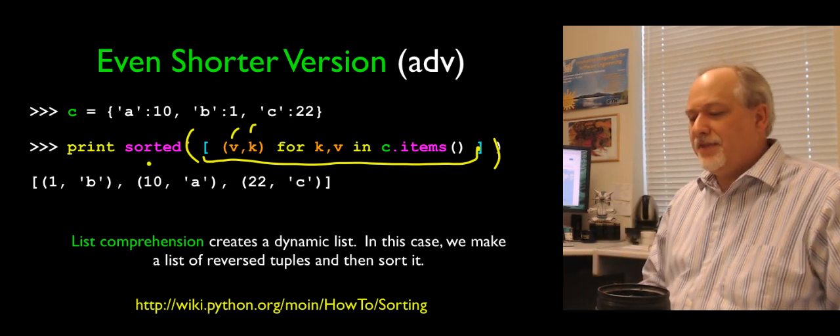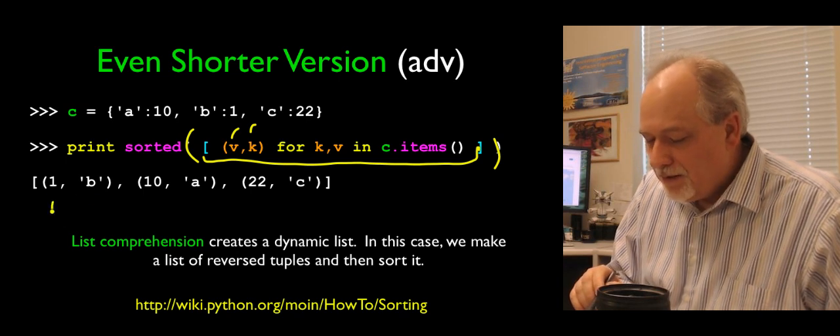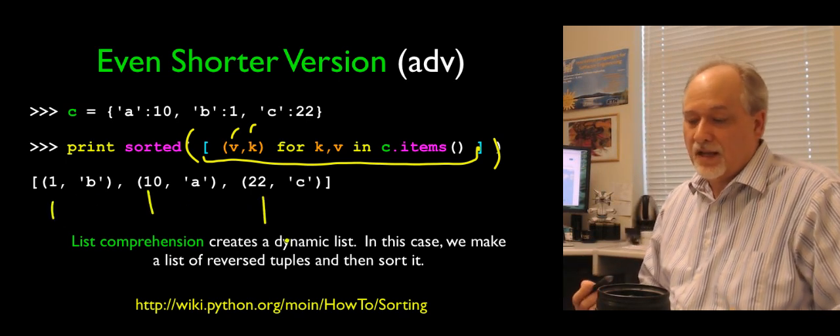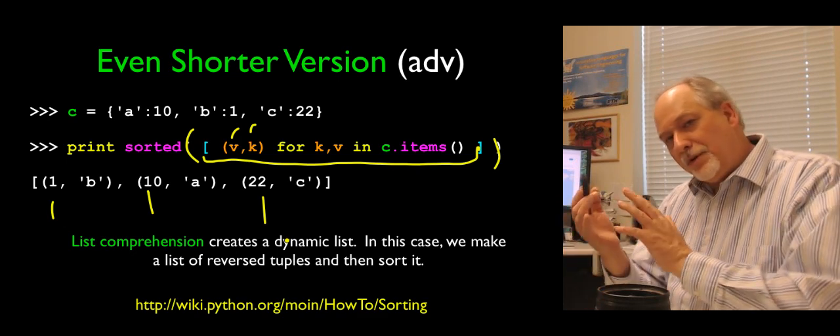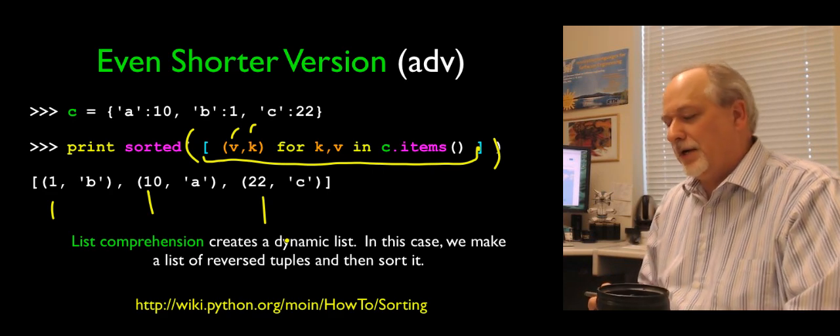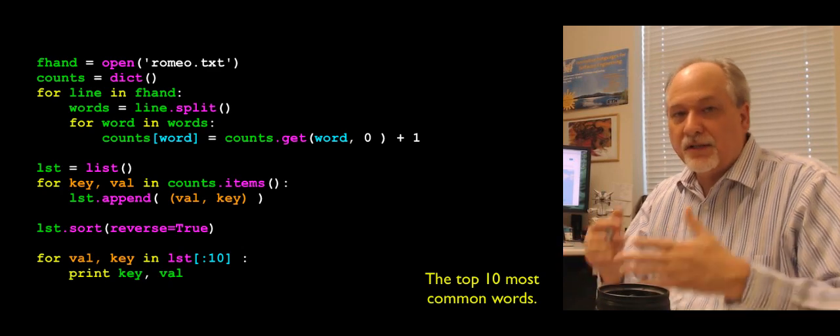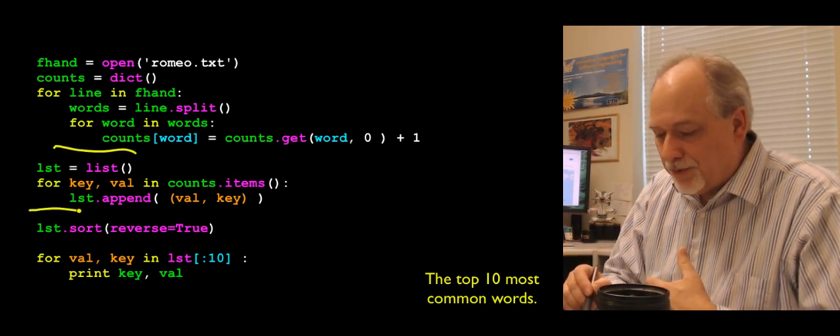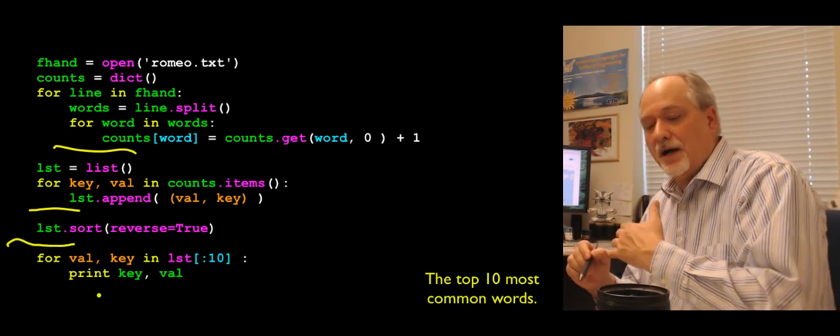And then once we have the list of tuples in value key order, then we simply take and pass that in to sorted. This is a function call, the sorted function. And then I'm not reversing it. But the print statement prints out in ascending order of the value. 1, 10, 22. So you can make these more dense once you're a little more comfortable with what's going on. It's sometimes easier to construct something that seems to have steps where you can put a debug print here. You can put a debug print here. You can do a debug print here. And you kind of see what's going on.